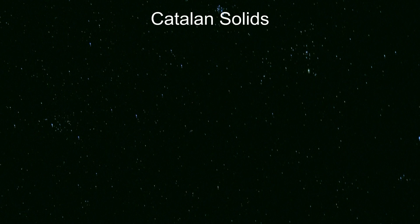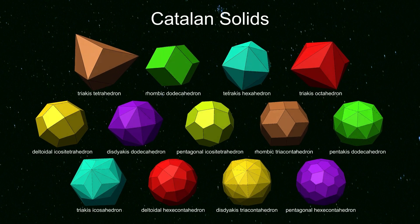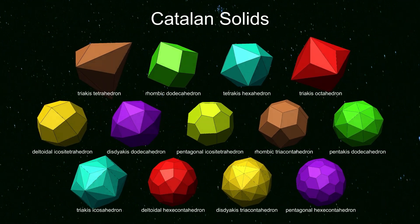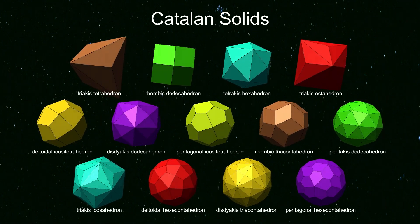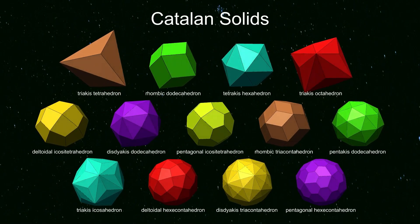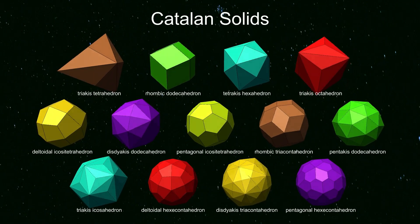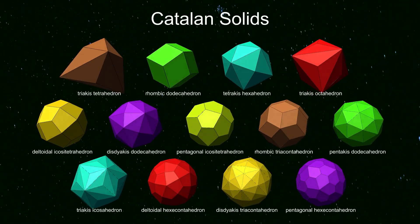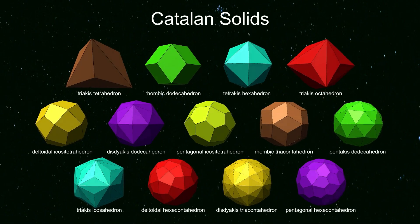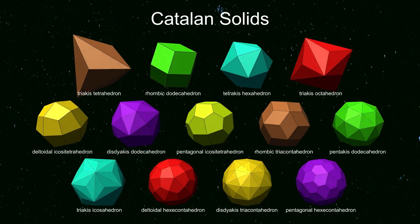These 13 intriguing shapes are the Catalan solids. They're the duals of the Archimedean solids. The most obvious feature of Catalan solids is that all their faces are the same. They're isohedral, or face-transitive, so can be used as fair dice. This is a direct consequence of being duals of Archimedean solids, which have similar vertices — vertex-transitive, or isogonal.